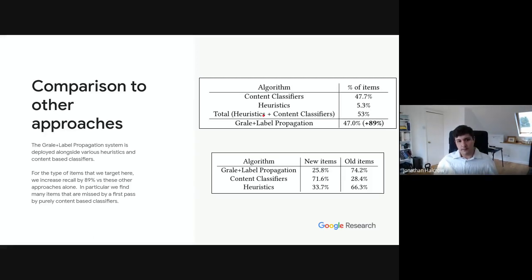Now to compare GRAIL to some of the other approaches that are being deployed within YouTube, it's used as part of a system that consists of some content classifiers, some heuristics, and then GRAIL with label propagation. And so you can see the content classifiers and the heuristics are getting about half. But then by adding GRAIL and label propagation onto this, we nearly double the recall of the system of just the content classifiers and the heuristics alone. So we increased by 89% the recall.